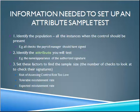Then we need to identify the attribute we will test. For example, if we're going to look for an authorized signature, we need to know what that looks like — is it an electronic signature or a handwritten signature? Is it in a certain color of ink, is it script, is it a certain typeface? We need to know exactly what the correct attribute — what the signature looks like.